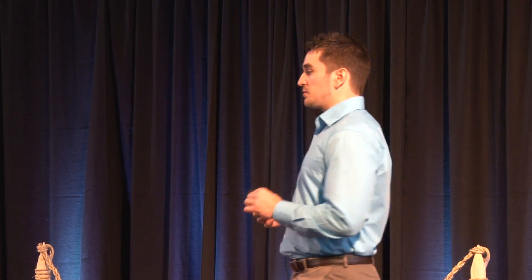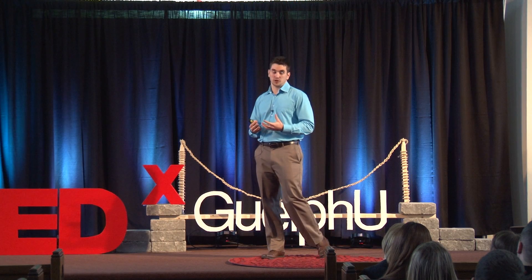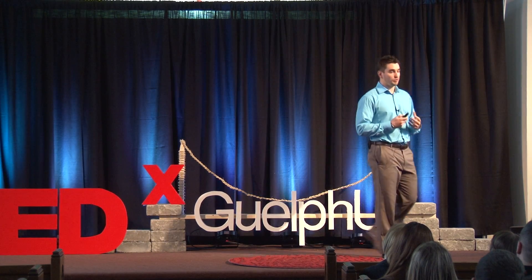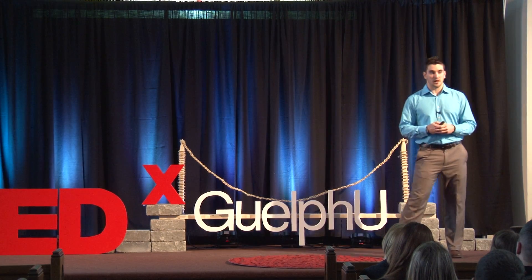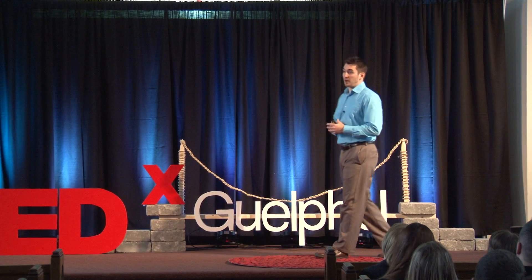The organs of the vestibular system are very, very small, and they're located bilaterally in the head, very close to the auditory system. While we might not readily be aware of the information that the vestibular system is providing us in the same way as vision, its importance to us when we're healthy really becomes relevant during vestibular malfunction.